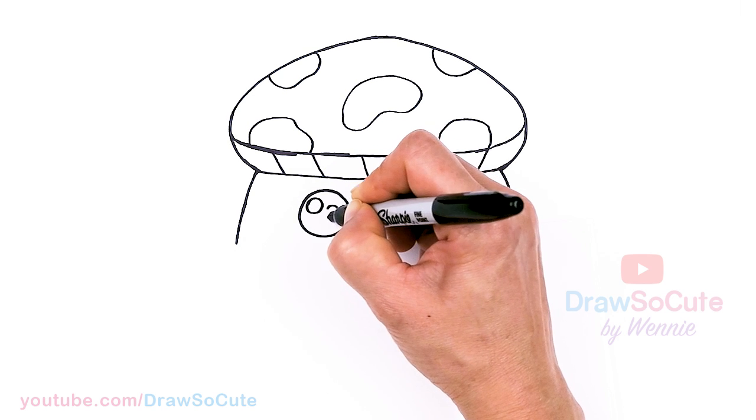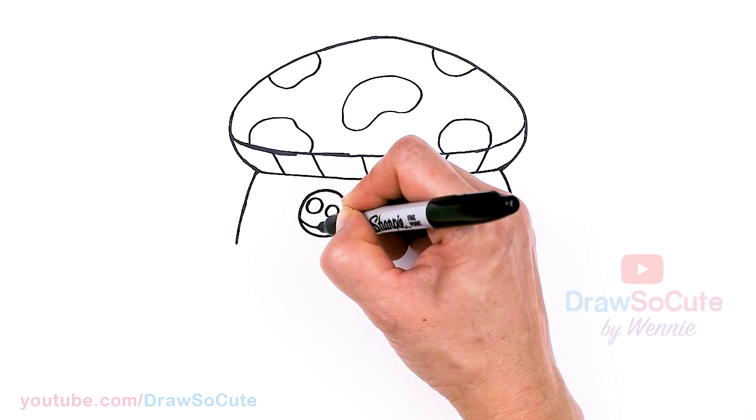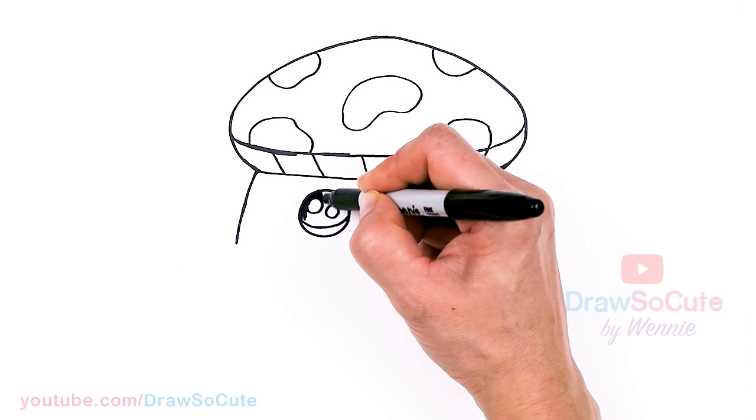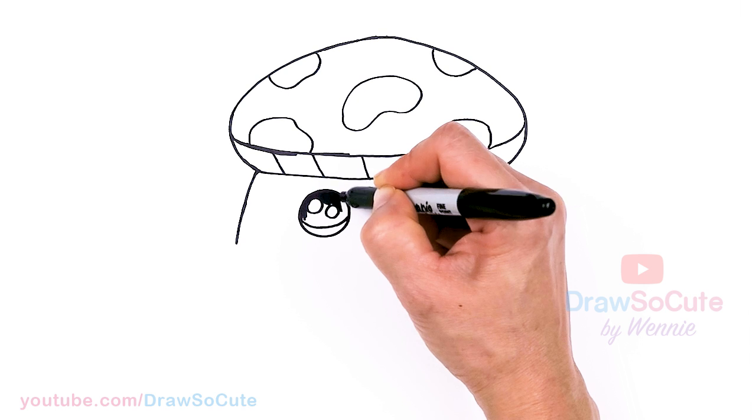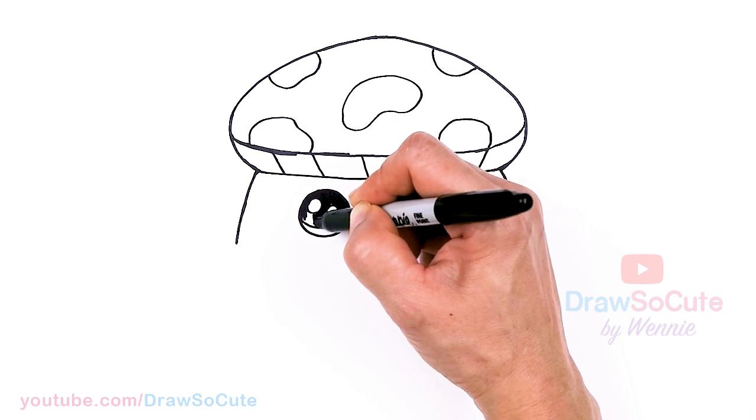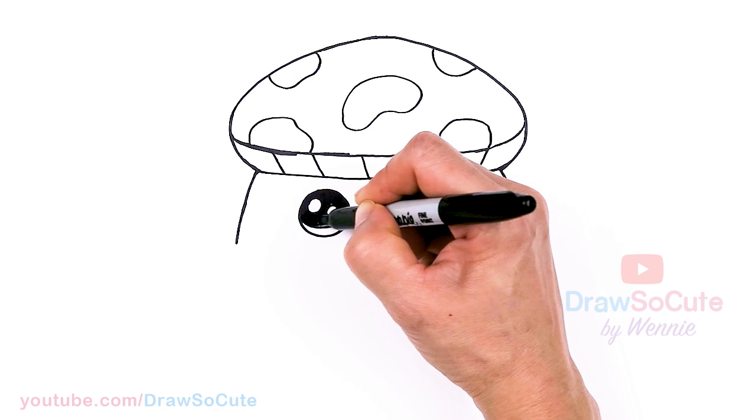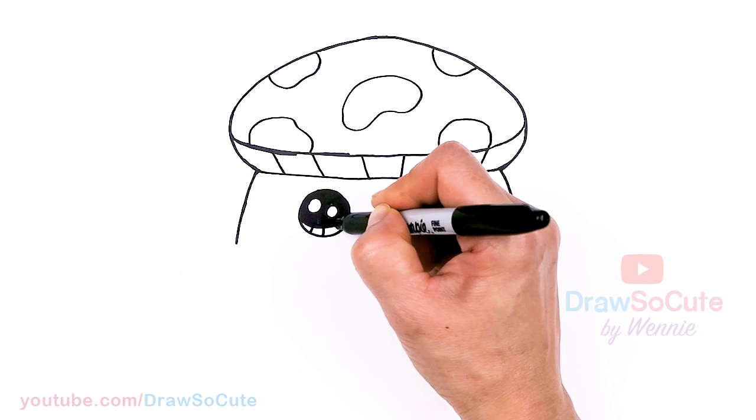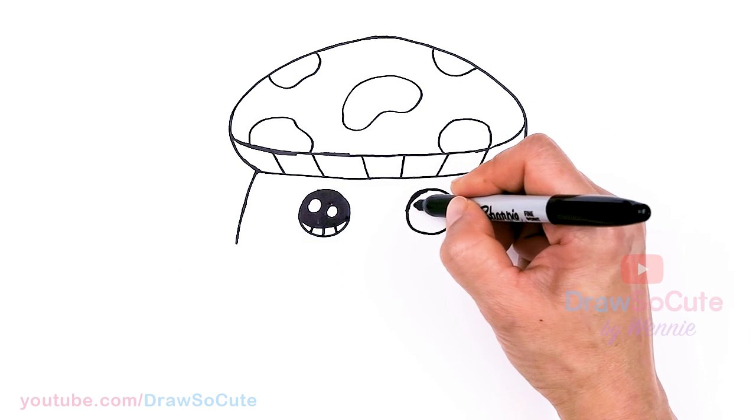And now with my circles in, let's make them draw-so-cute eyes. So two small circles inside for highlights and a curved line at the bottom, and shade in the top and lines at the bottom. And same thing over here.